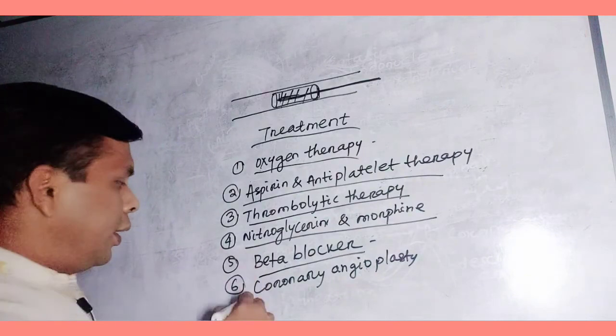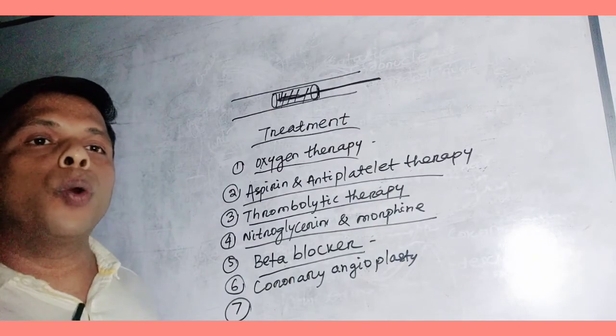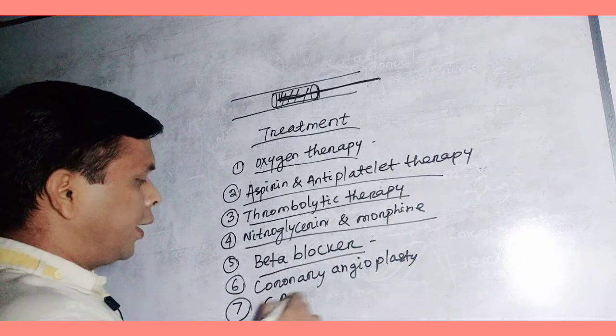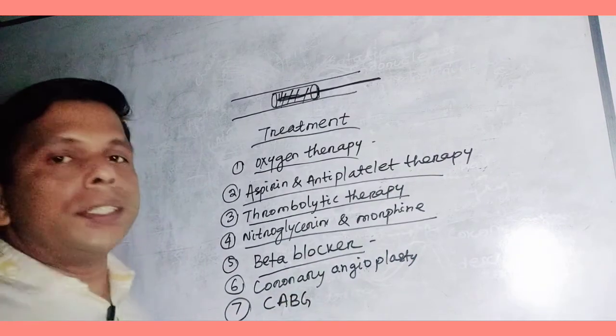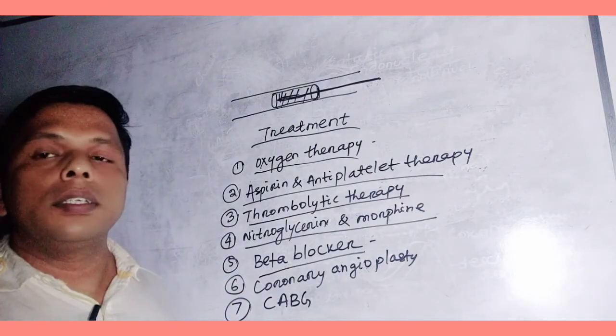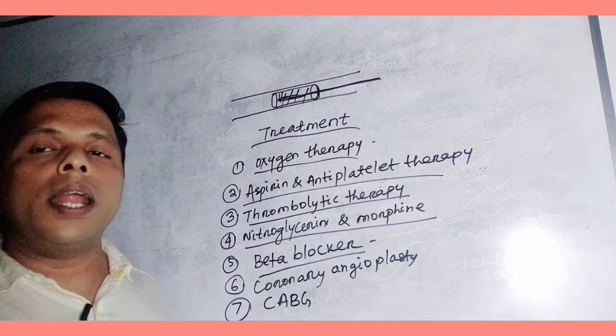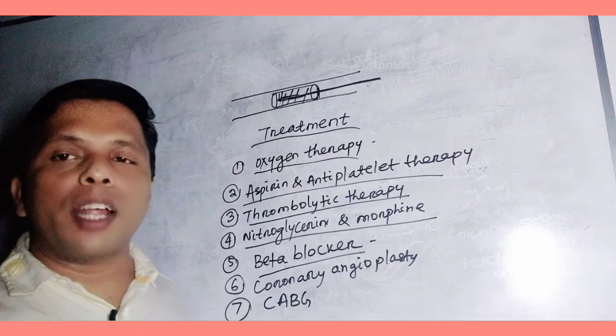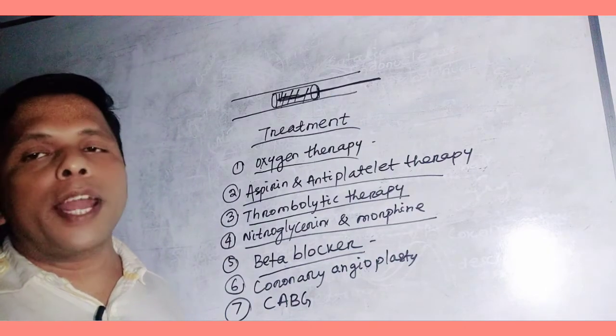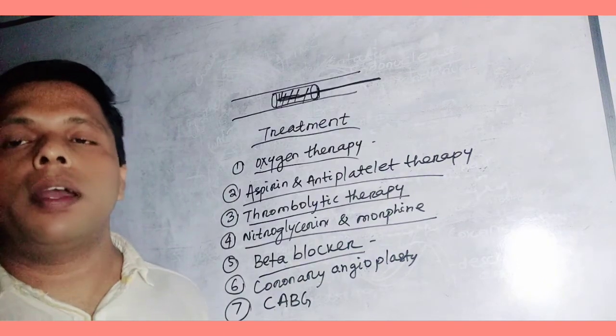The seventh type of treatment is coronary bypass grafting, CABG, commonly called cabbage. Coronary artery bypass grafting. In this method, coronary artery is bypassed by an artificial graft so that the blood flow can be maintained. These are various treatments of heart attack. Let us close it. Thank you.